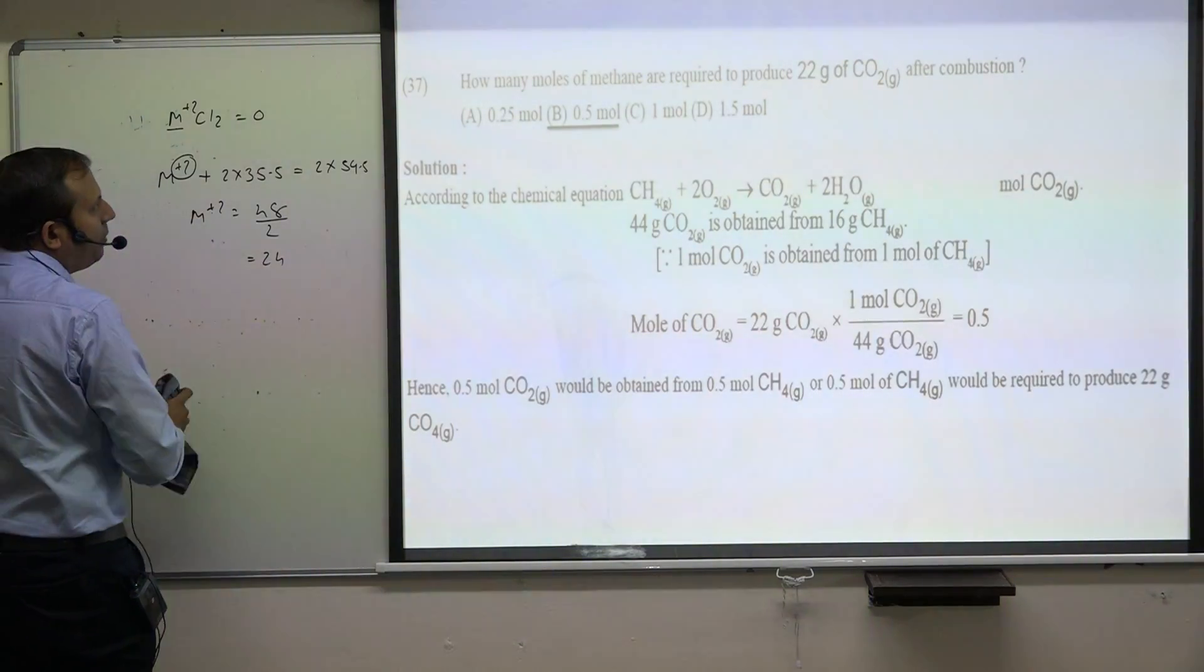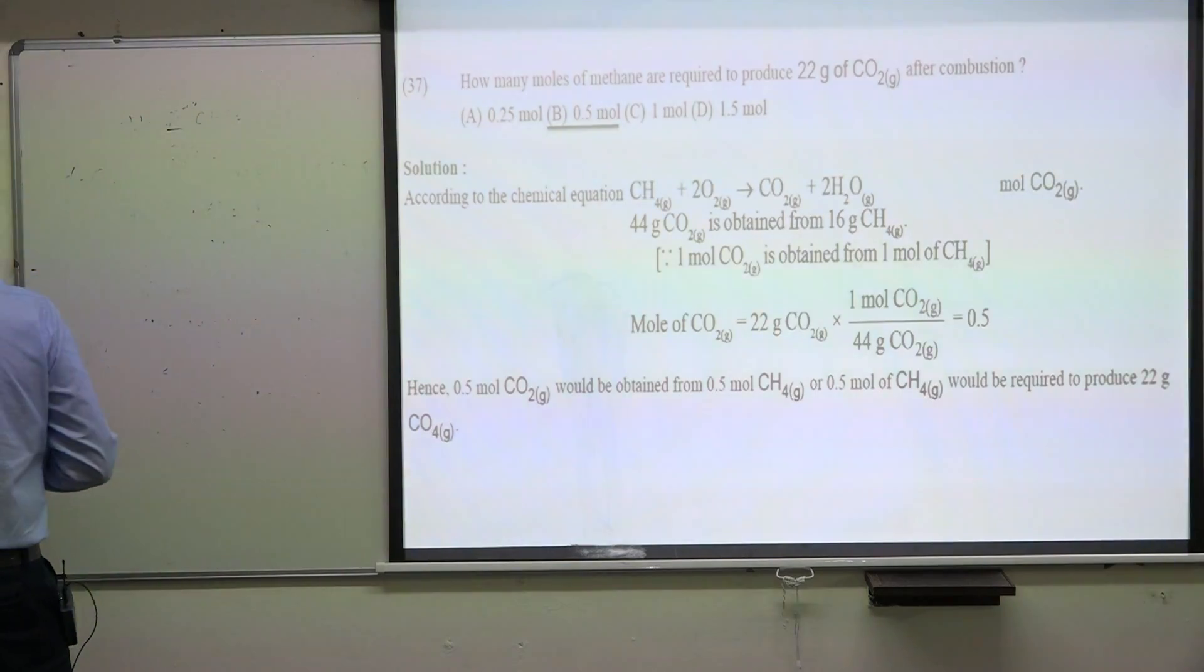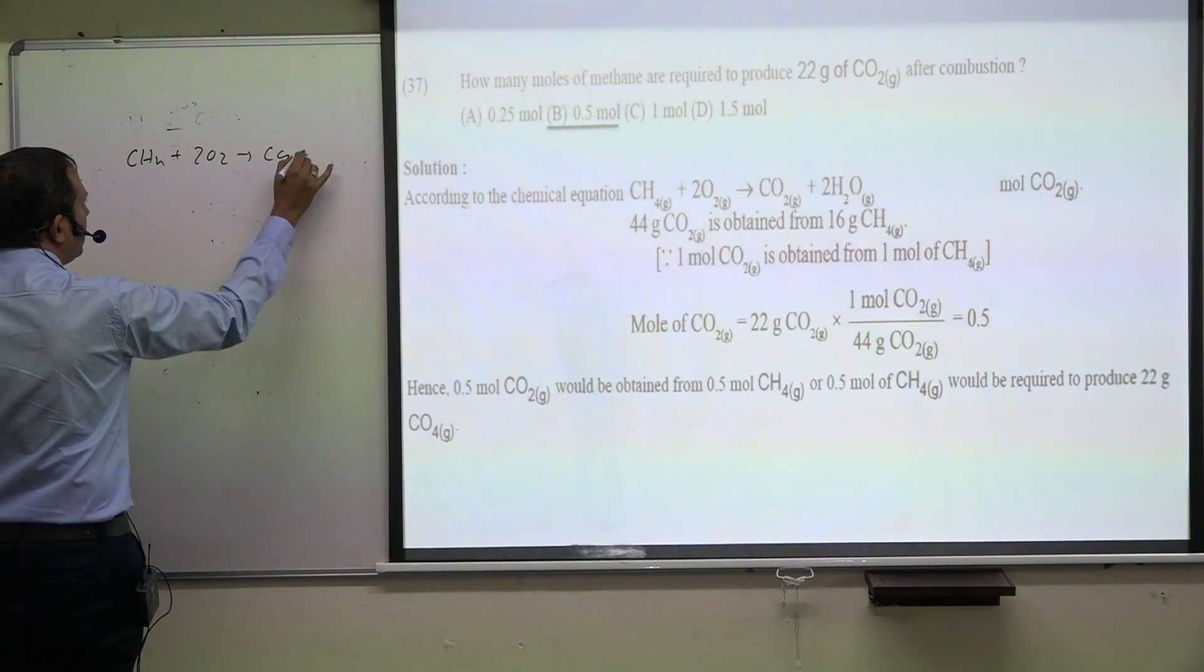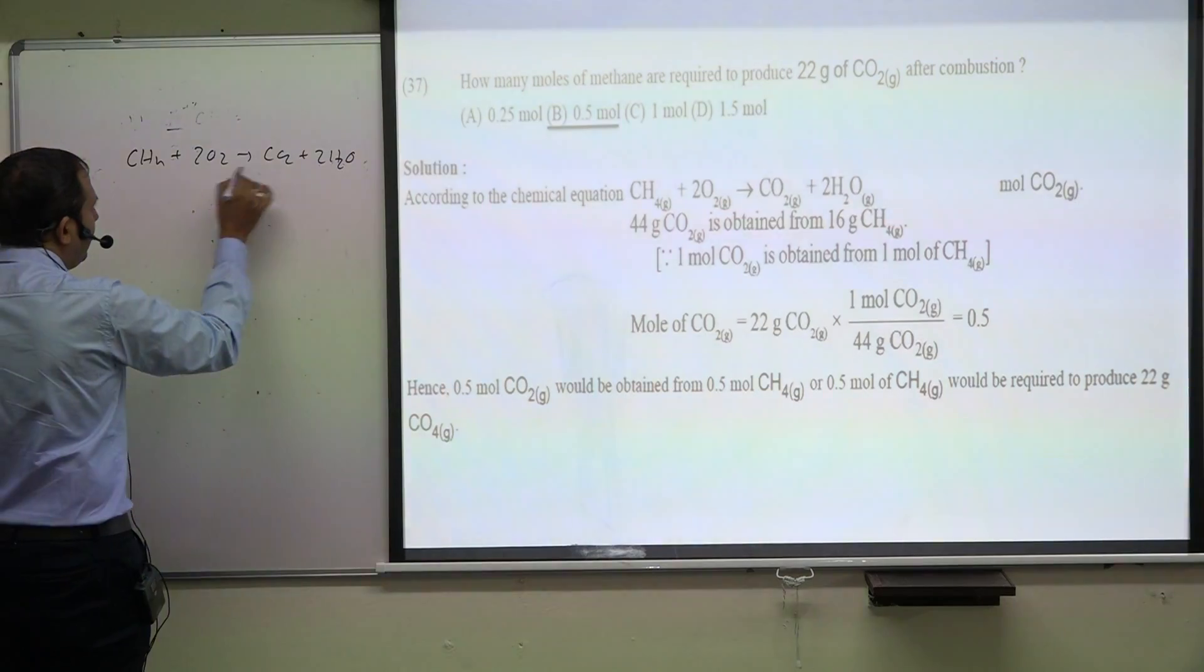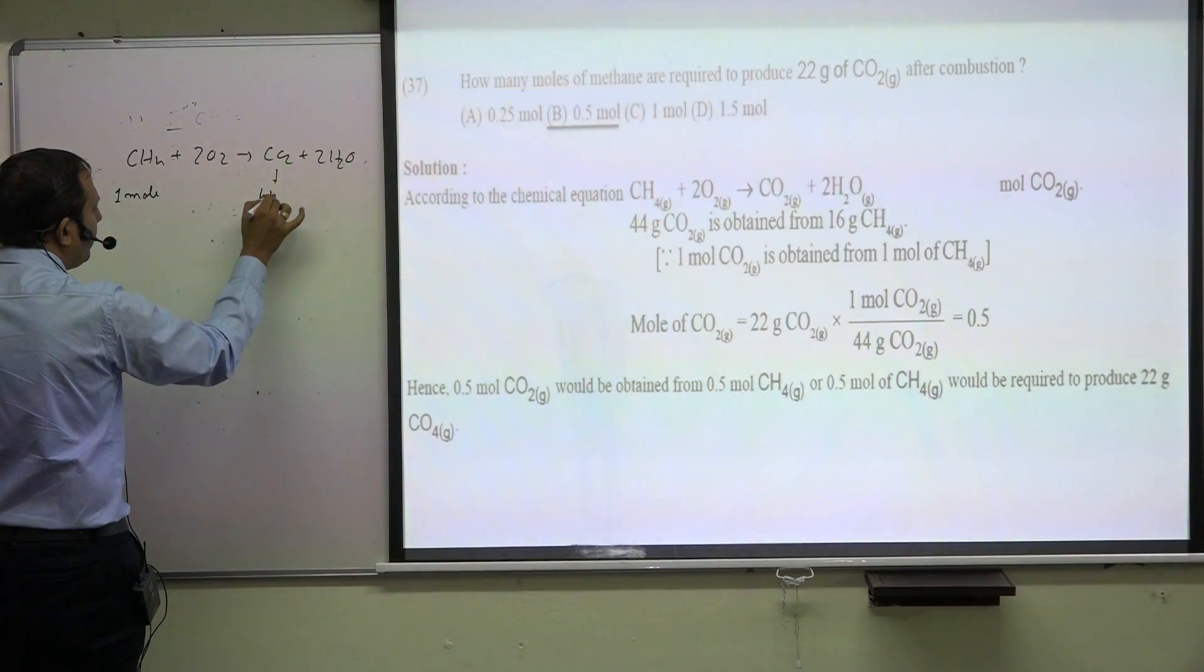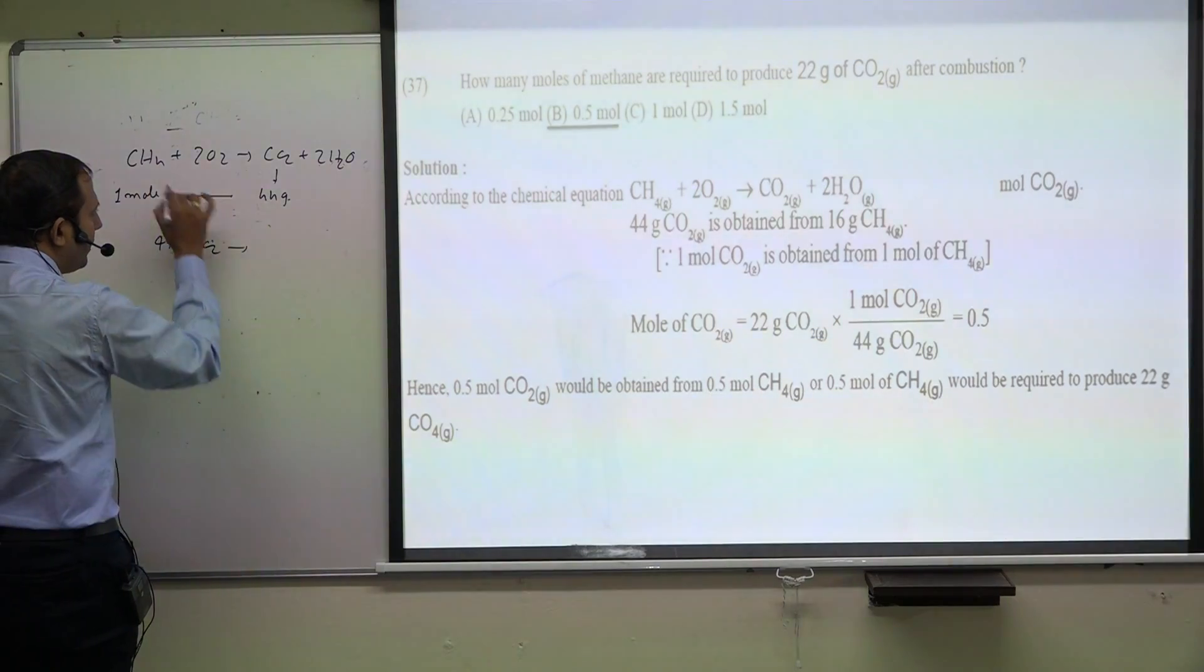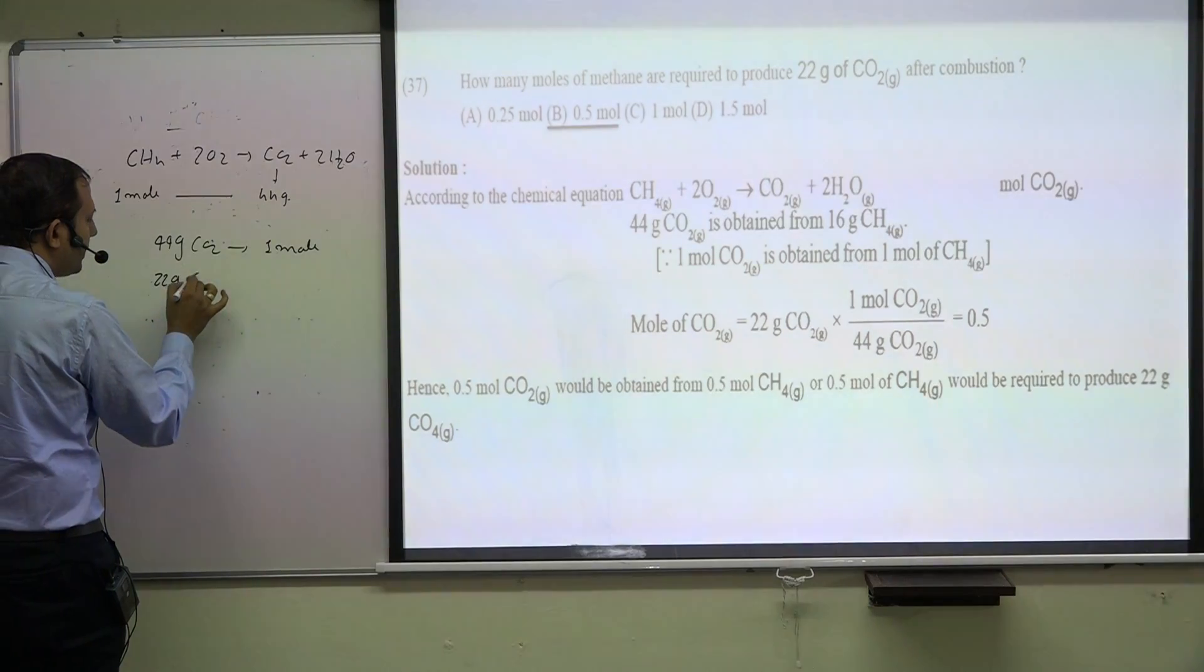How many moles of methane are required to produce 22 grams of CO2 after combustion? Methane CH4 plus 2O2 gives CO2 plus 2H2O. For the combustion producing 22 grams CO2, we have one mole producing 44 grams. We can write 44 grams CO2...